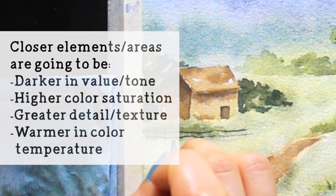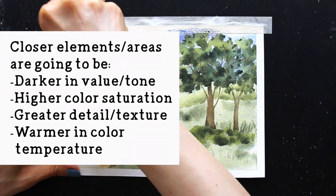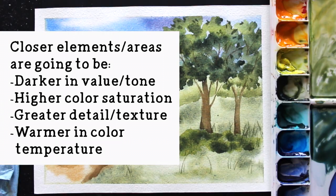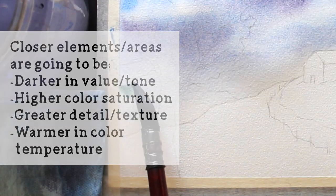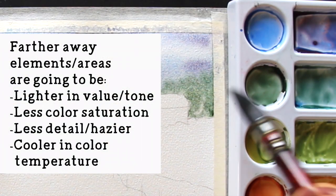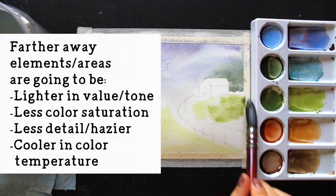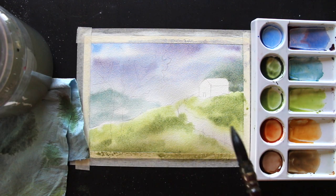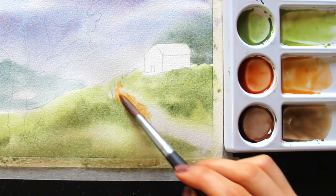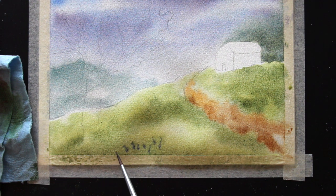Atmospheric or aerial perspective tells us that things closest to us are going to be darker in value or tone. Color in elements is going to appear more saturated. We're going to see a greater amount of detail or texture in elements that are closest to us, and color temperature tends to get warmer the closer the thing is to us. Whereas things farther away are going to be lighter in value or tone, color will appear less saturated or weaker, they'll be hazier, blurrier, or less detailed, and color temperature is going to be bluer or cooler. By simply bringing these key points into your artwork, you're going to arrive at much more believable results, even when painting a scene from imagination.